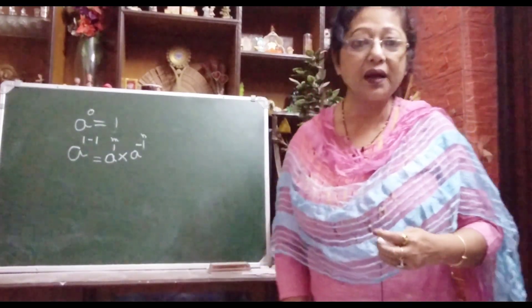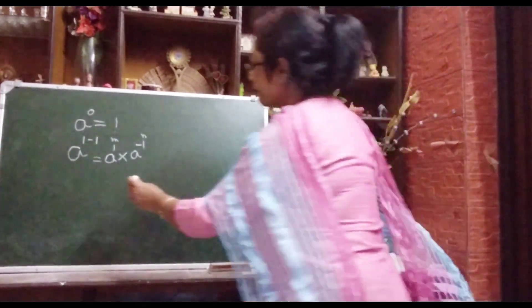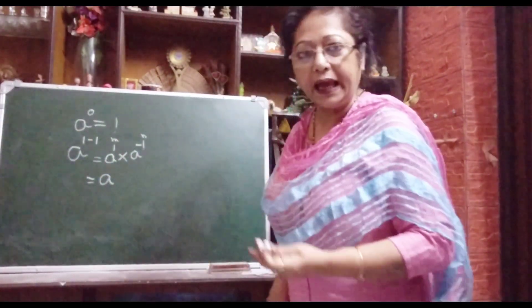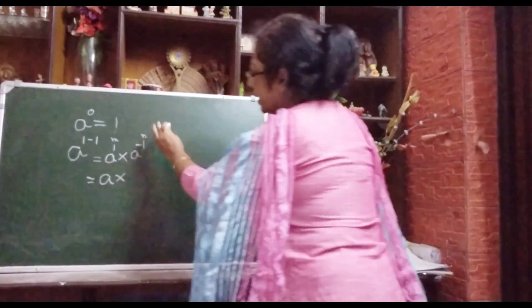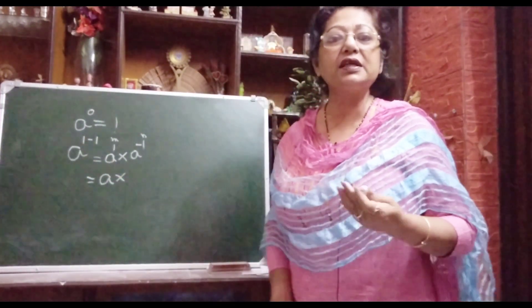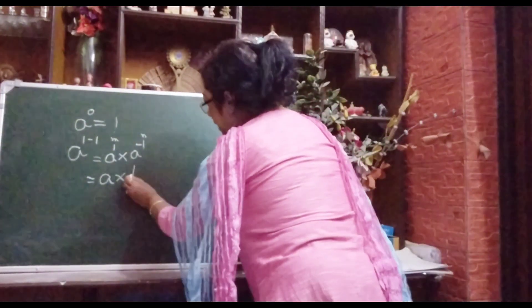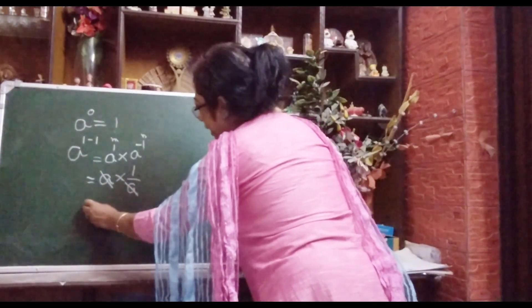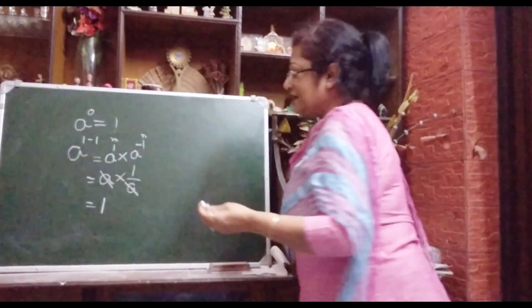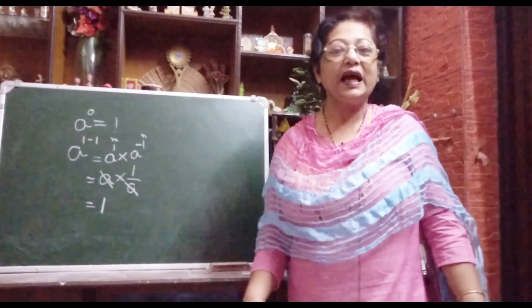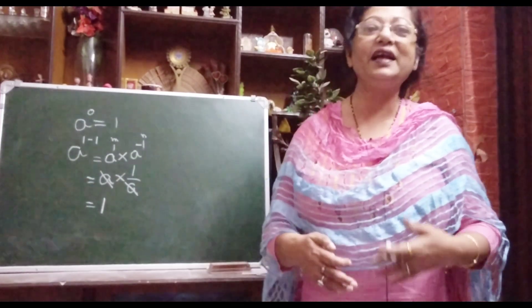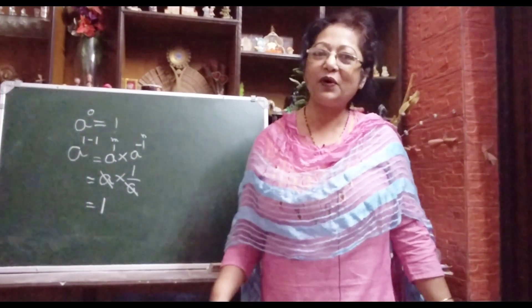So a to the power minus 1 means a inverse. Now a to the power 1 means a, multiplied by a inverse. A inverse we write as 1 by a. Now I am canceling a and a, so what is coming? a divided by a equals 1. So it is proved: a to the power 0 equals 1. This is the reason why any number to the power 0 equals 1.